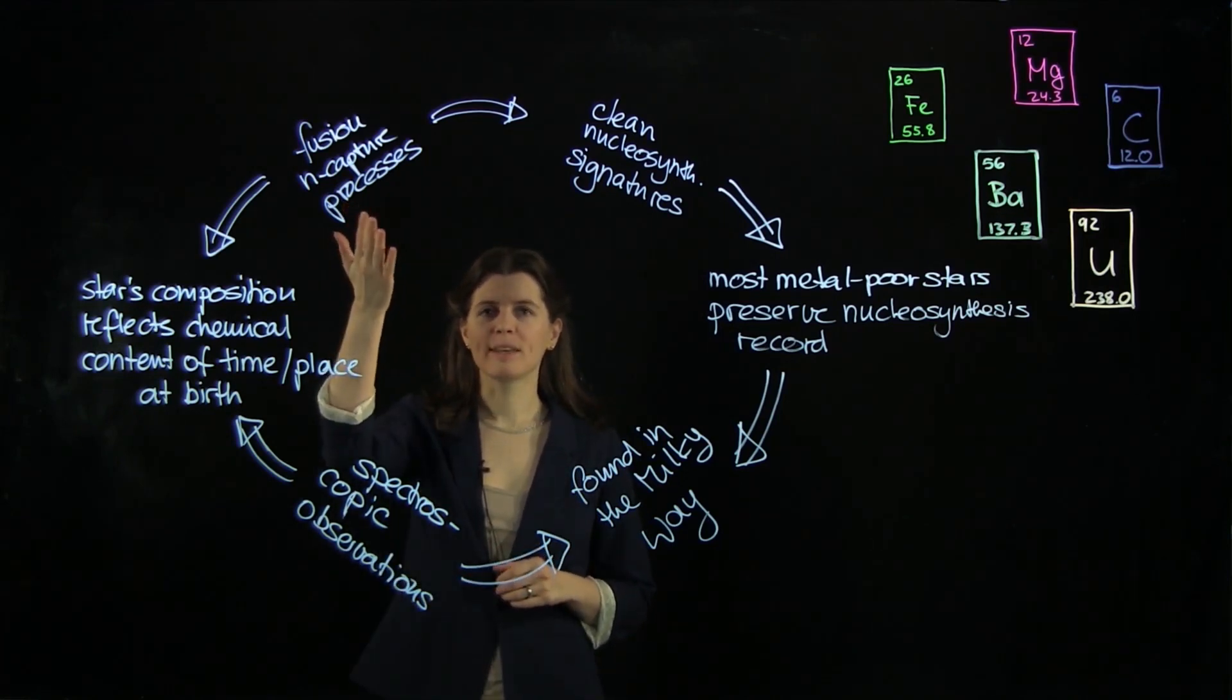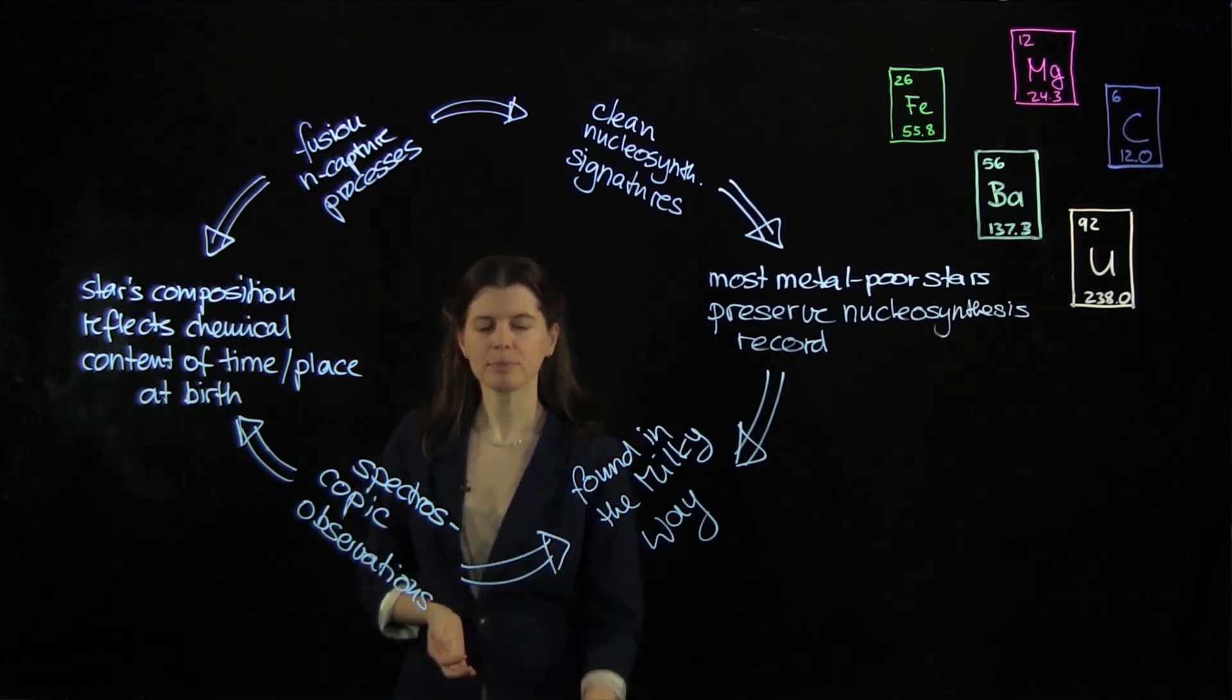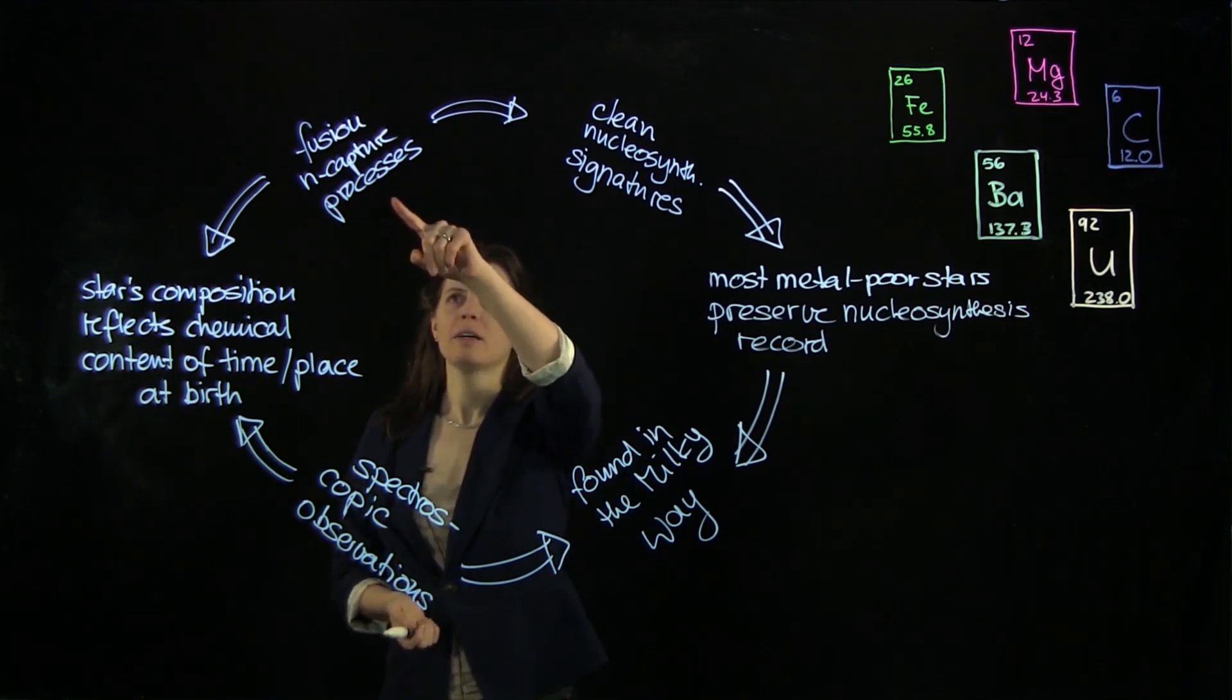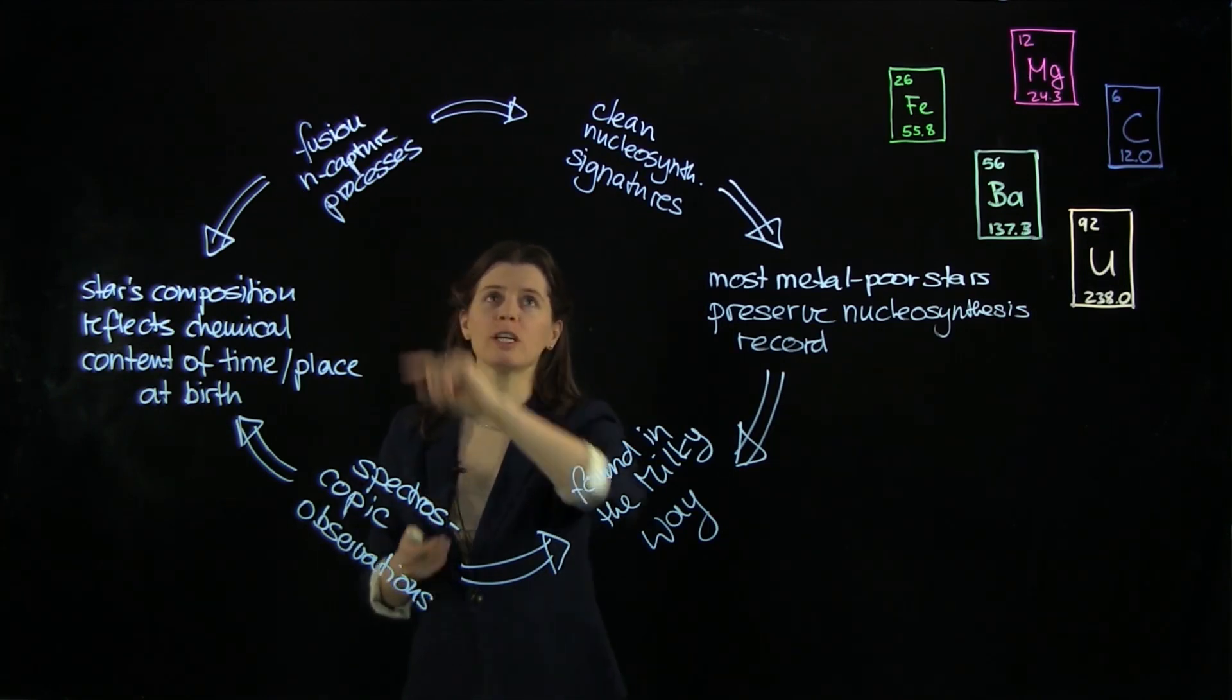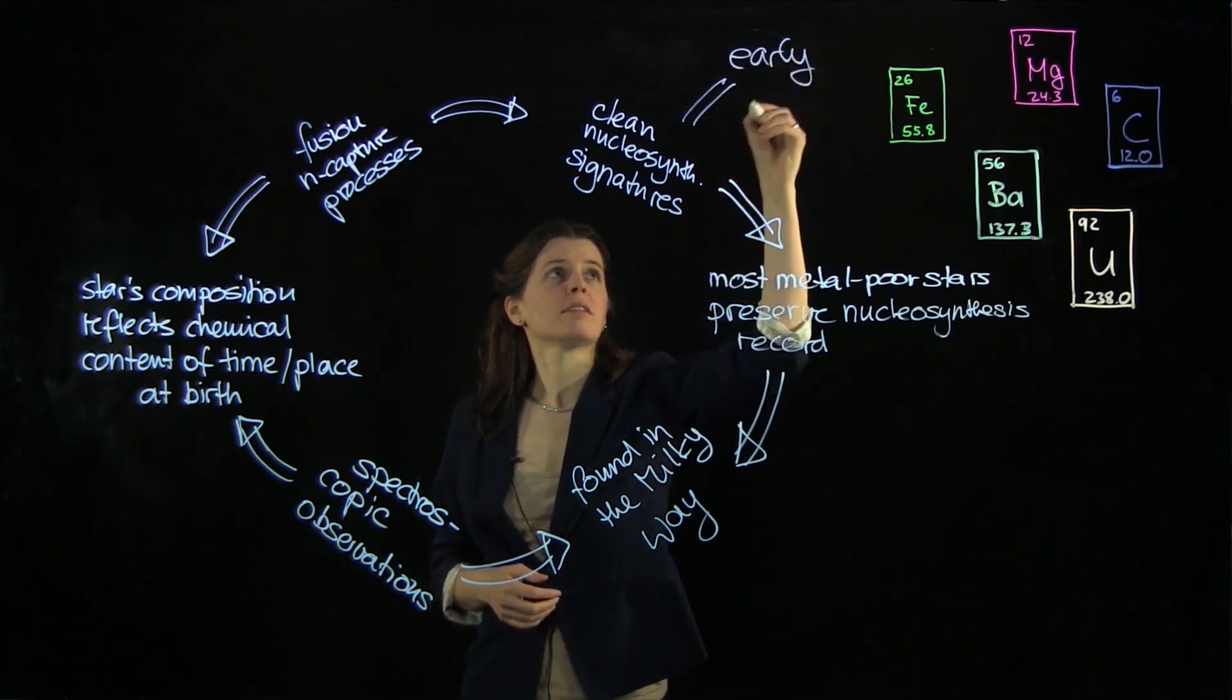And once these elements are created, they can then be observed and they contribute to the chemical evolution of the universe. If they are produced in the early universe, then we can see them in the older stars.